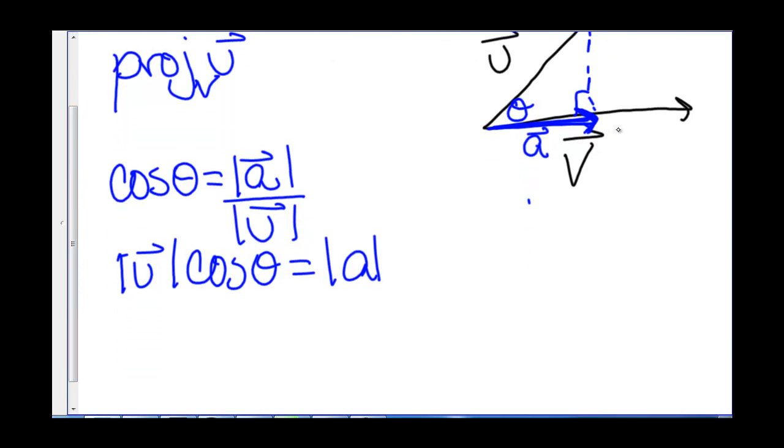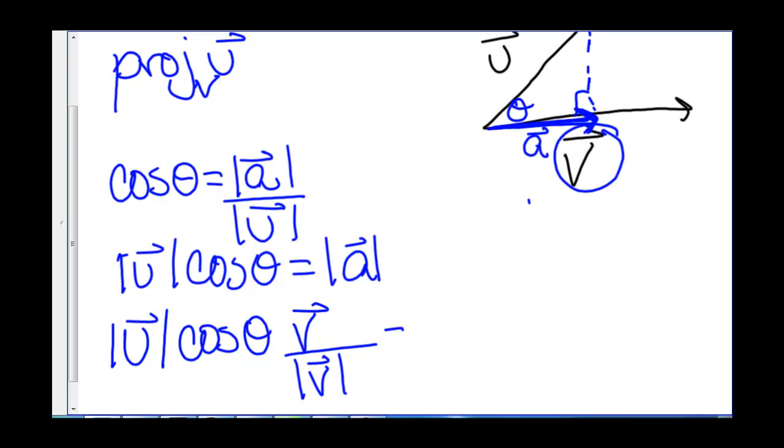And then this vector v tells me the direction. So we have u times cosine theta times v. That gives me my direction. But I need to divide by the length, because I only want the direction, not the length. And that's going to give me my vector a, as you'll see.